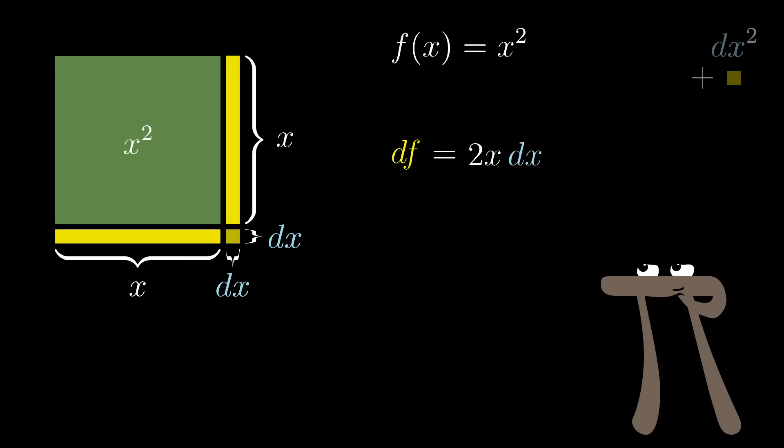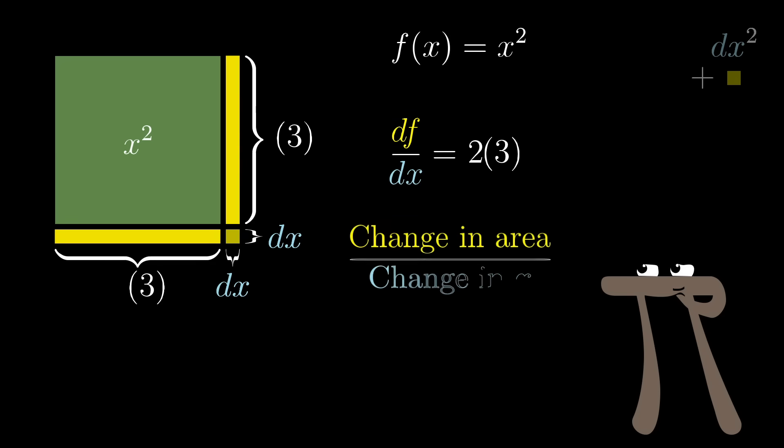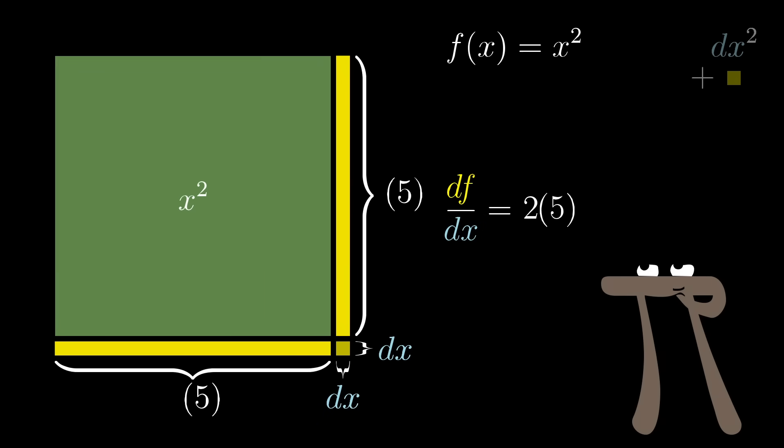What this leaves us with is that df is just some multiple of dx, and that multiple, 2x, which you could also write as df divided by dx, is the derivative of x squared. For example, if you were starting at x equals 3, then as you slightly increase x, the rate of change in the area per unit change in length added, dx squared over dx, would be 2 times 3, or 6. And if instead you were starting at x equals 5, then the rate of change would be 10 units of area per unit change in x.